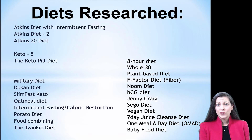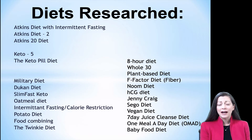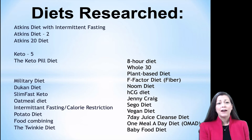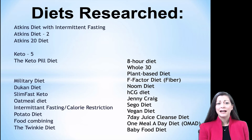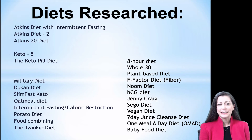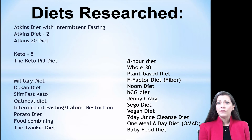In this class for spring 2020, these are the diets that your peers reviewed. Five people reviewed the Atkins diet: two reviewed the plain Atkins diet, one the Atkins 20 diet, and one reviewed the Atkins diet with an overlay of intermittent fasting. Five people reviewed the keto diet, and one person reviewed a variation of that — the keto pill diet.